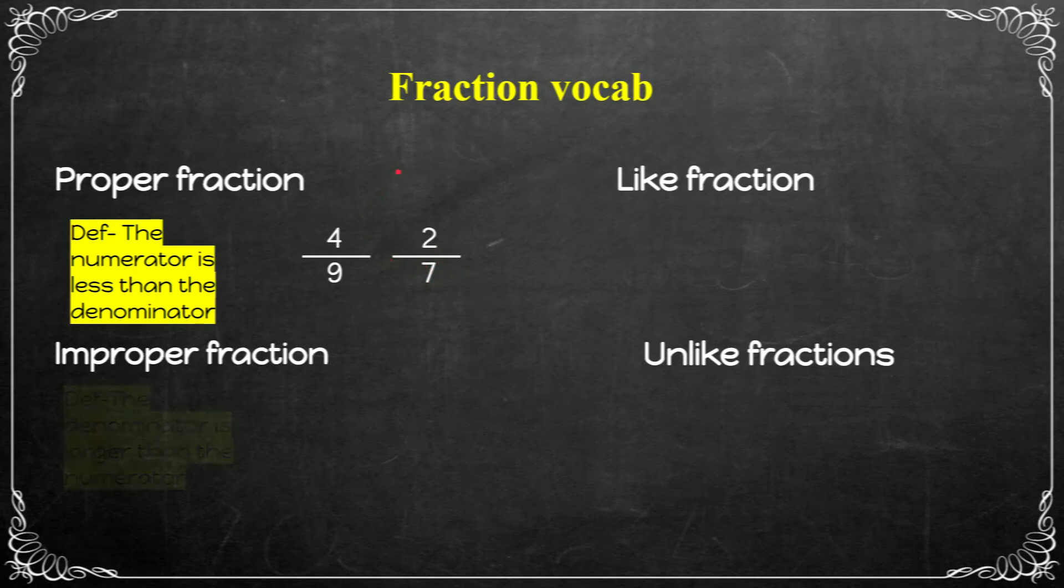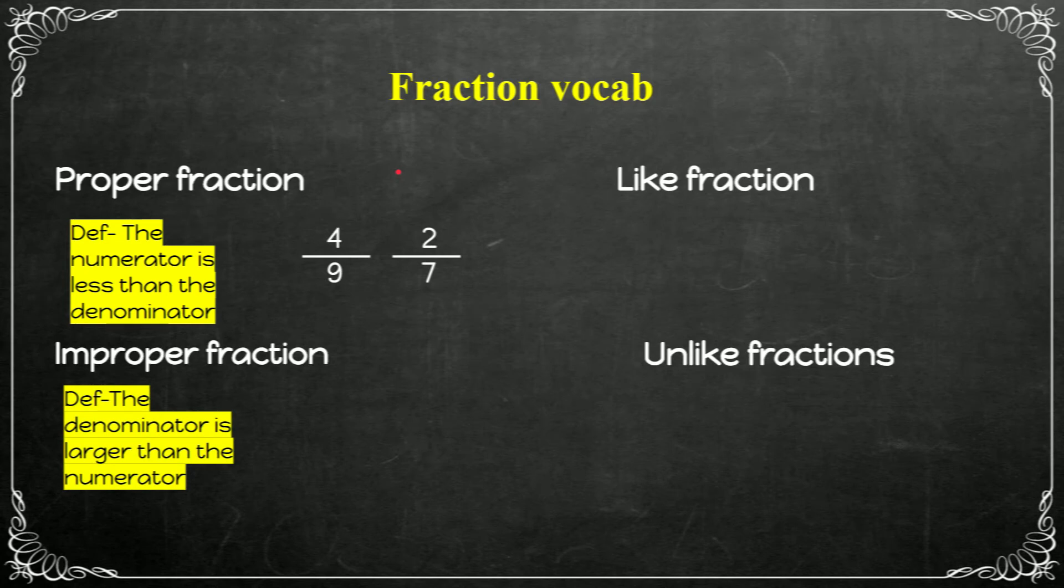Now let's take a look at improper fractions. In improper fractions, the denominator is larger than the numerator. It's the opposite of a proper fraction. Let's see examples. Three halves is an improper fraction. Three is larger than the denominator. Three is larger than two. And then we have 20 seventeenths. 20 is larger than 17. So the numerator is larger than the denominator.